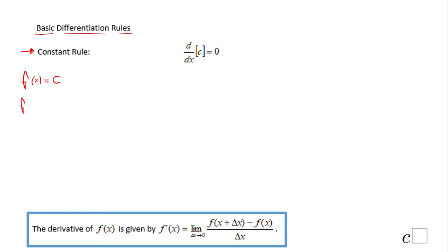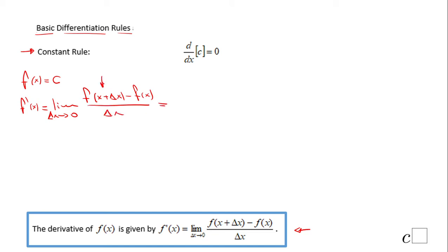If the function f(x) is a constant C, then f prime of x using the limit definition will be the limit as delta x approaches zero of f(x + delta x) minus f(x) over delta x. Now f(x + delta x) is nothing else than C, so we have the limit as delta x approaches zero of C minus C over delta x, and that becomes nothing else than zero.